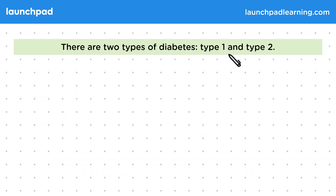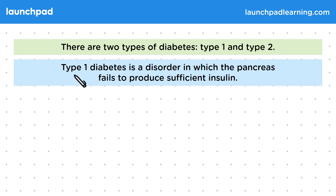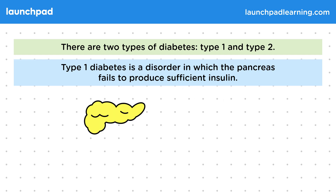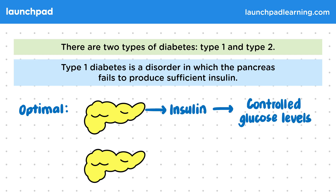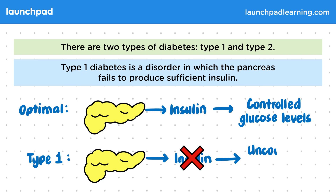There are two types of diabetes: type 1 and type 2. Type 1 diabetes is a disorder in which the pancreas fails to produce sufficient insulin. In a person with optimal blood glucose regulation, the pancreas produces insulin to control blood glucose levels. However, in a person with type 1 diabetes, no or insufficient insulin is produced, leading to uncontrolled high glucose levels.